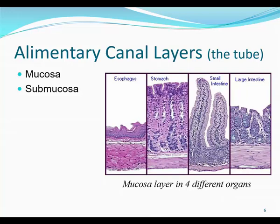Underneath the mucosa is the submucosa layer, which is connective tissue that functions to support the mucosa layer. It contains connective tissue, glands, blood vessels, lymph vessels, and nerves. Its function is to nourish the mucosa layer. Next is the muscular wall, all of smooth muscle, which helps mix and move the food material. Smooth muscle is involuntary and is activated by the parasympathetic nervous system to contract.